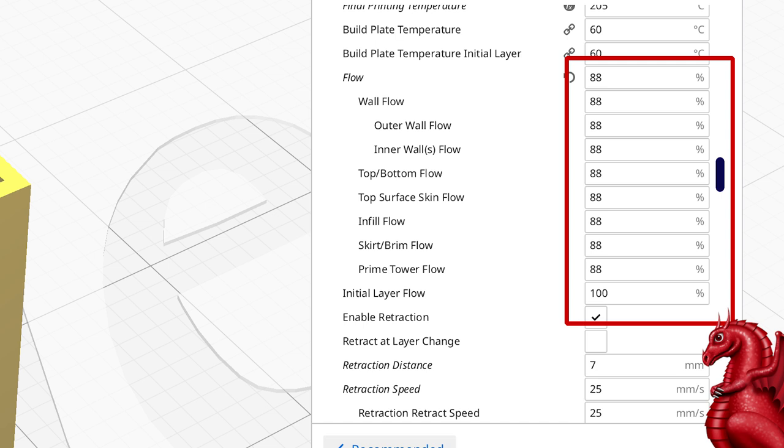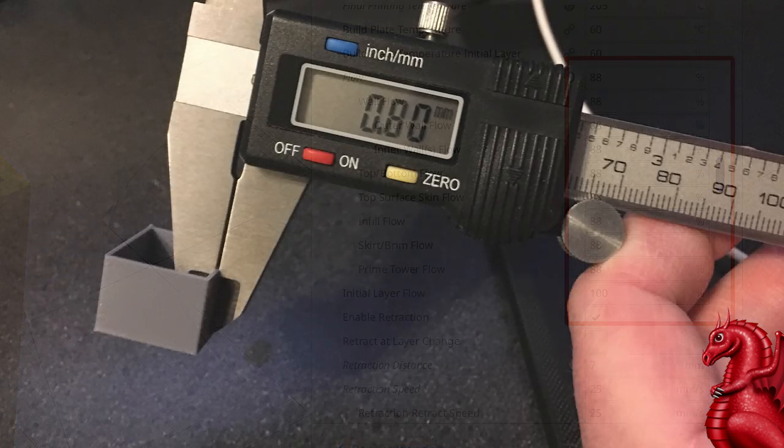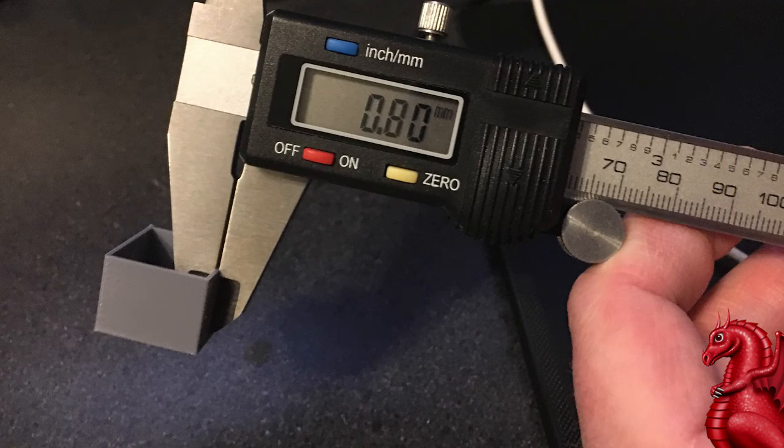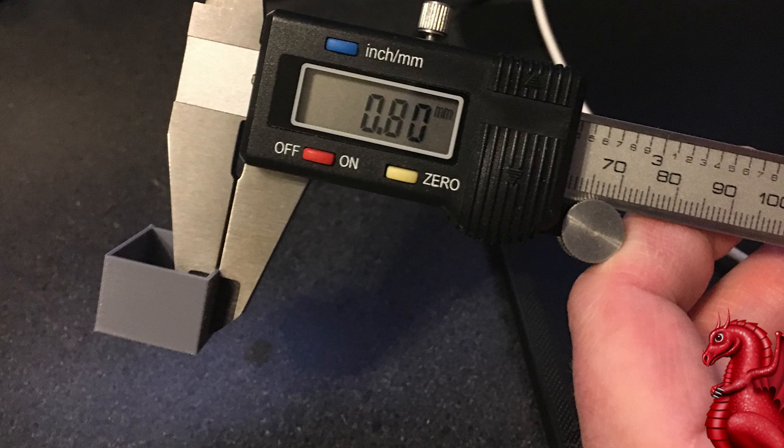Run this again, and with my 88, my shell walls come out perfect. That's it. That's a simple process to get your machine perfectly tuned for extrusion. Thank you for watching. Please click that subscribe button in the bottom right hand corner.